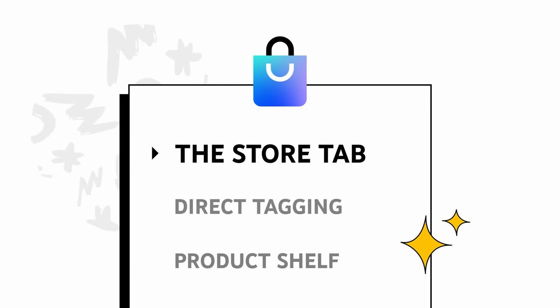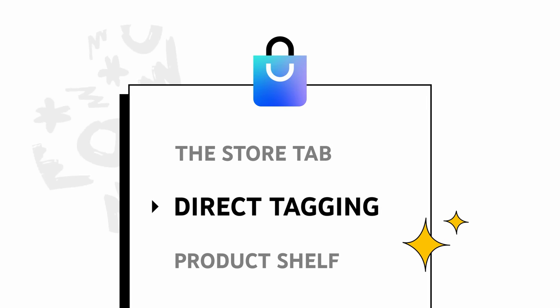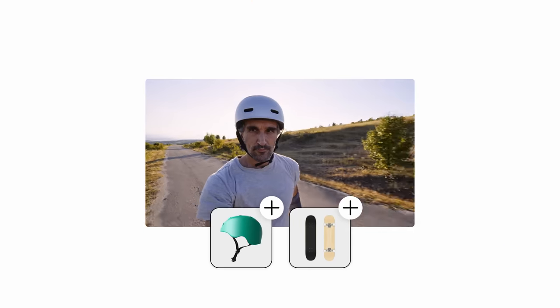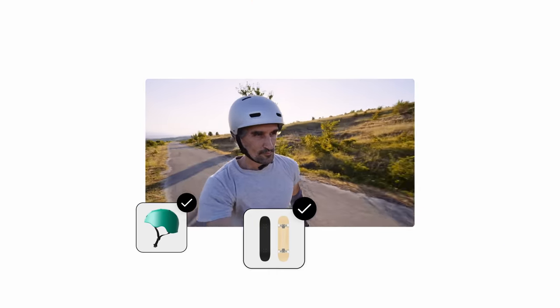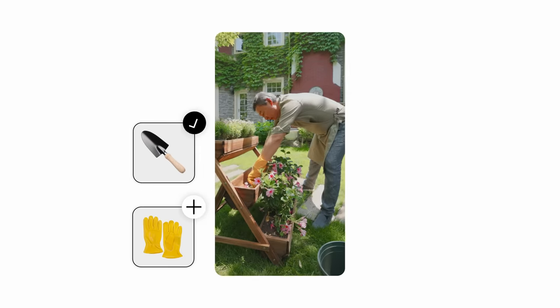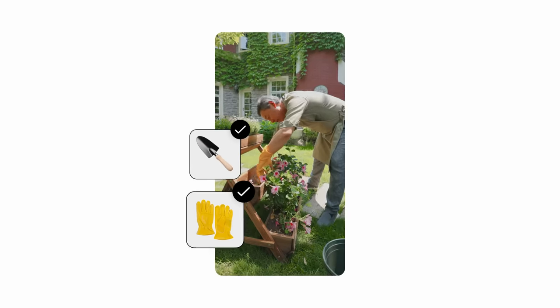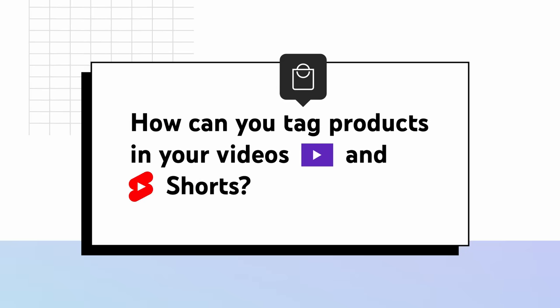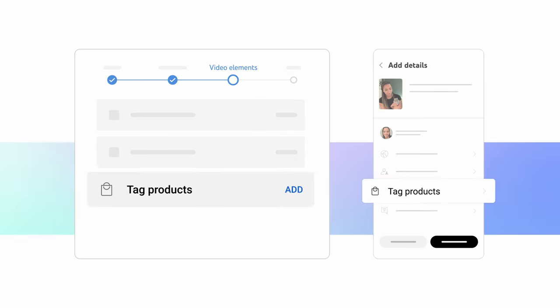Next, let's walk through how to use direct tagging to sell specific products featured in your videos, shorts, and live streams. This type of tagging gives you the freedom to create content that actively highlights specific products from your store in a way that's true to you, your fans, and your business goals. You can tag specific products that are featured in your videos or shorts during the upload flow — from here, hit Tag Products.